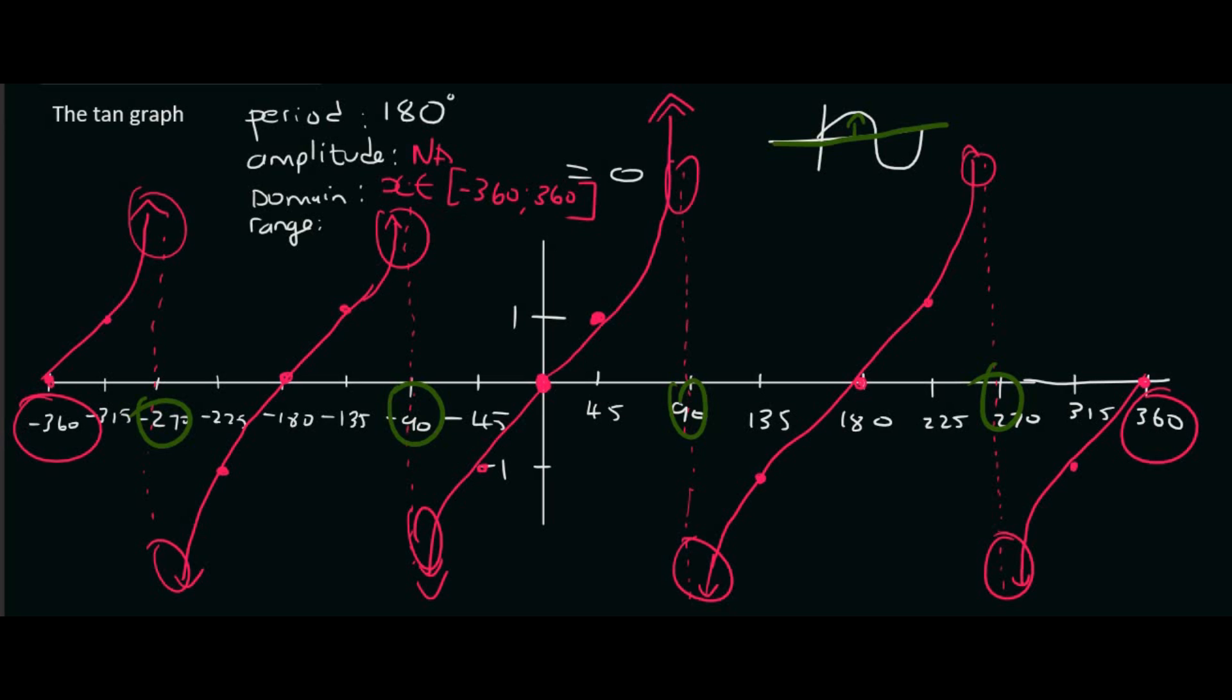So the way that you would show that is next to this part over here. You would have to say something like X cannot be, and then you'd list all those values. So minus 270, minus 90, 90, and 270. X can't be those values.